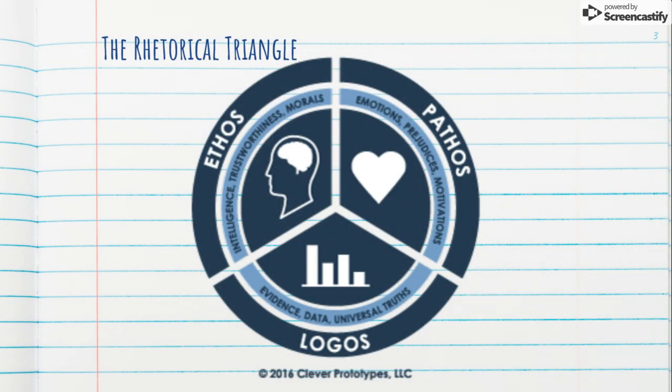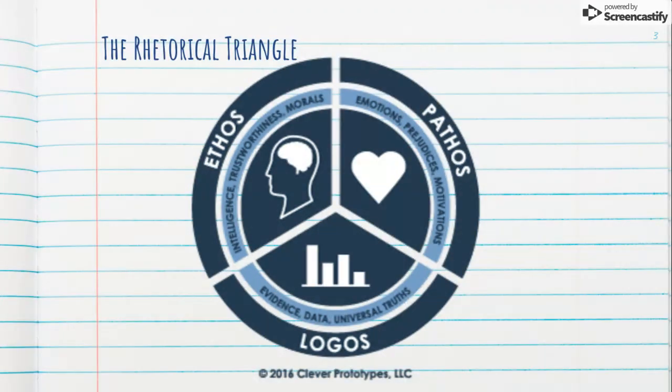This is the rhetorical triangle: ethos, pathos, and logos. All three of these combined help motivate our audience to believe in what we are saying and believe what we are saying is true.